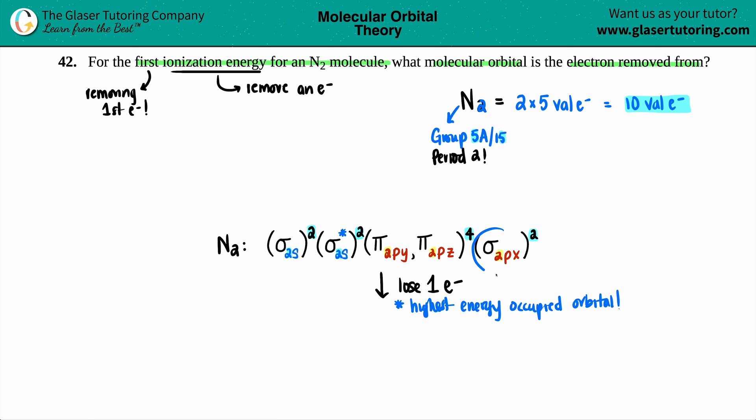So you lose your electron in the highest energy occupied orbital. Occupied means that there's actual electrons in it. Remember, I got rid of those two that were here. It wouldn't be the last one because that wasn't occupied with electrons. So you would drop this one. And this would now become a one. I had two electrons, I drop it down to one, I lost my first electron. And what molecular orbital was that? It was the sigma 2px orbital. And that is your final answer. So what molecular orbital is that electron removed from? The sigma 2px molecular orbital, and we are done.